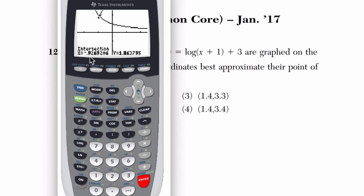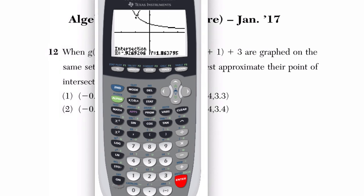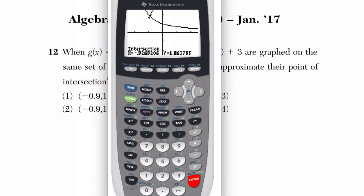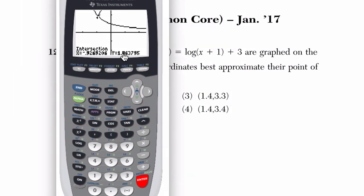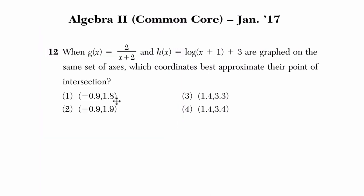They're about there. So, negative 0.9 - you can see that in choice 1 and choice 2 - and then the output of 1.9. So it is choice 2 right here. I'm going to circle that.